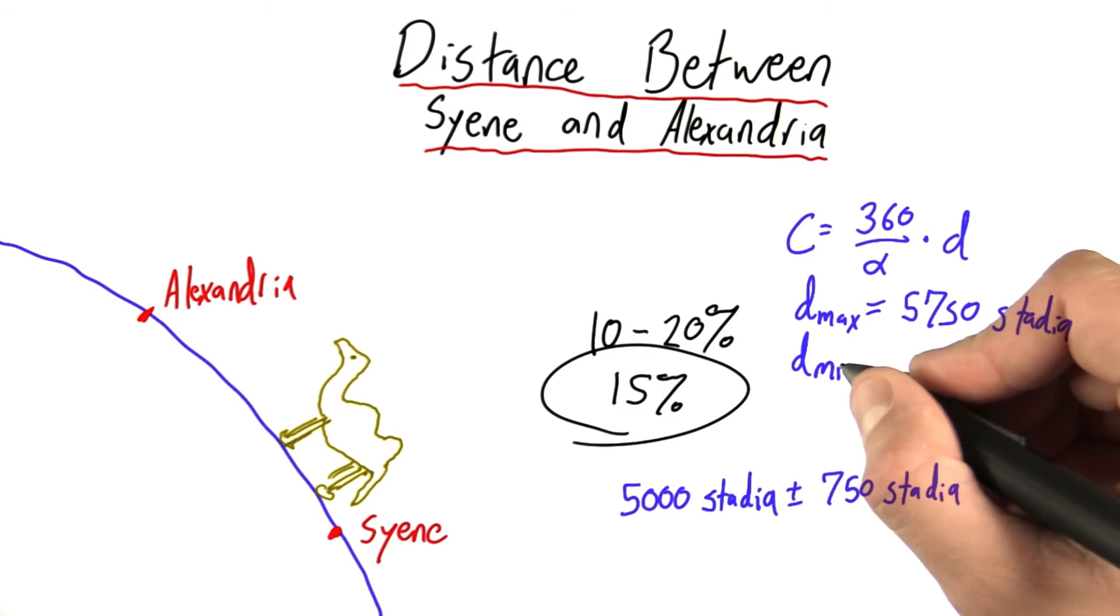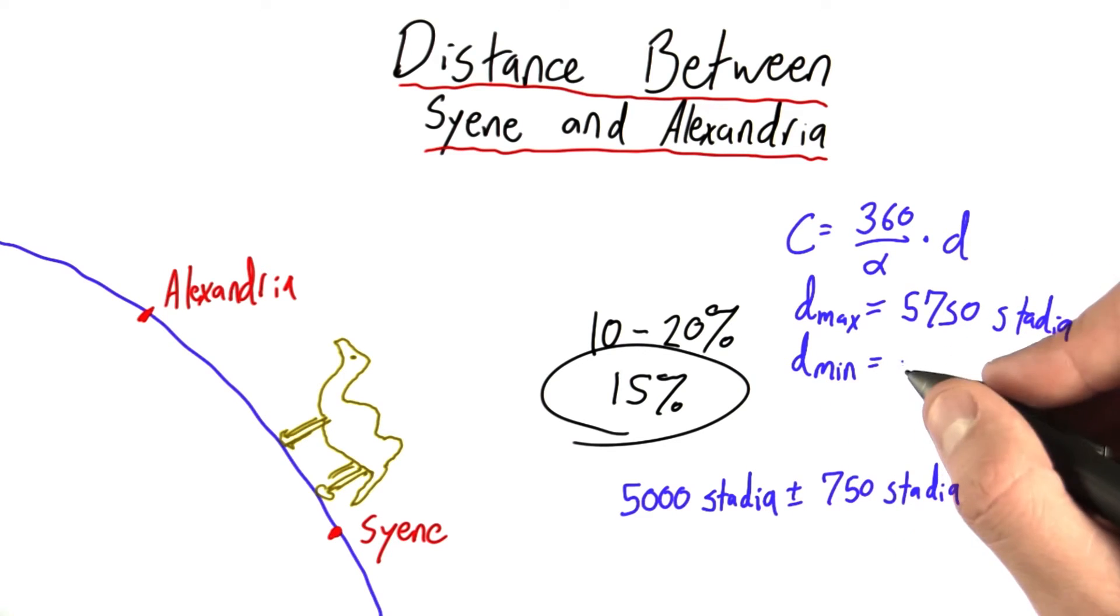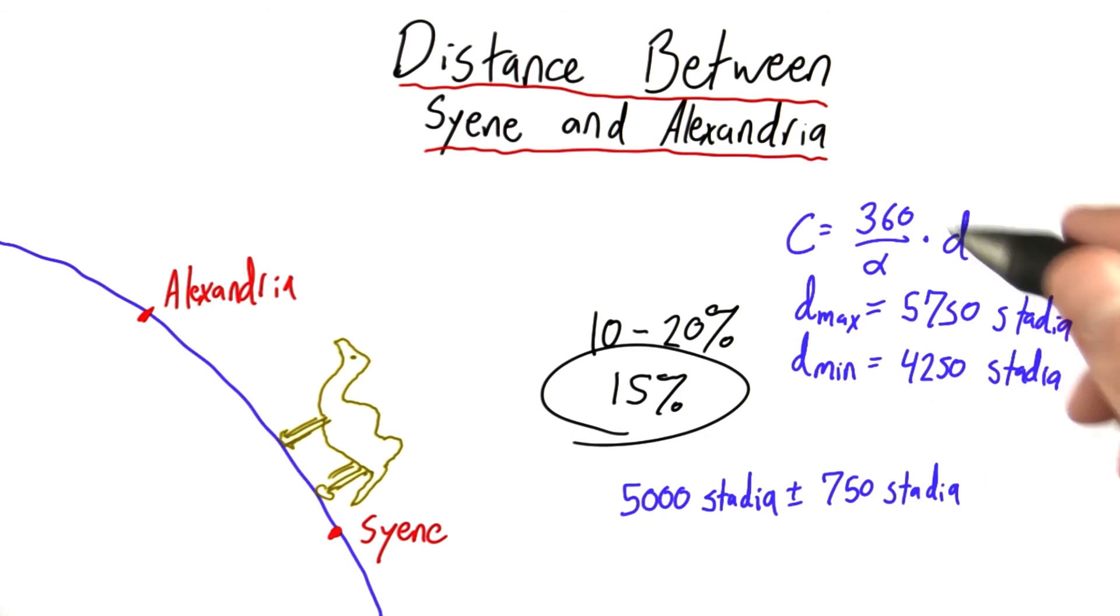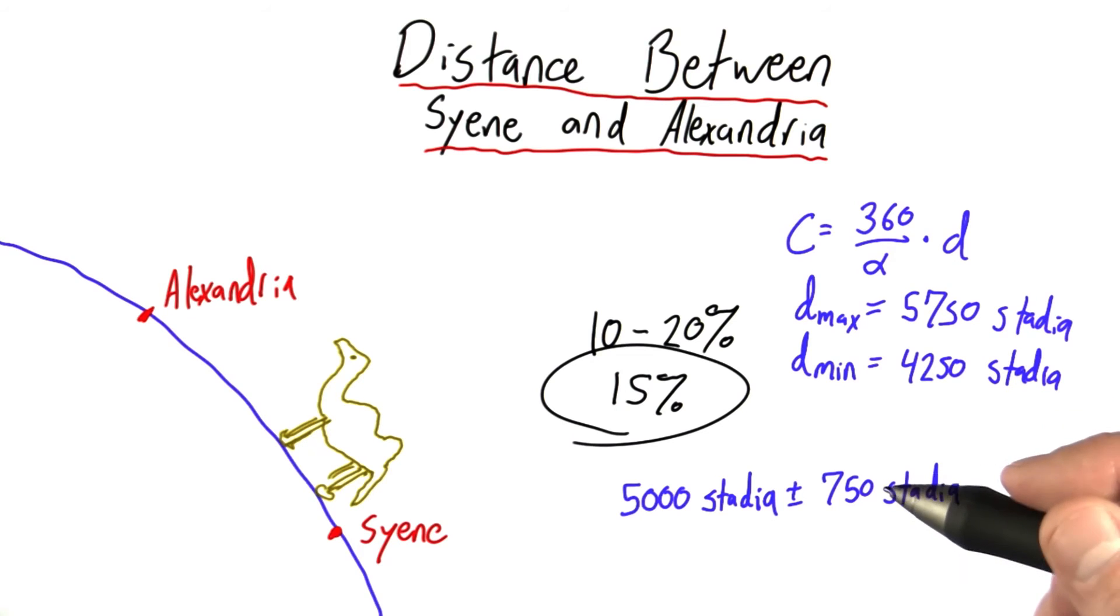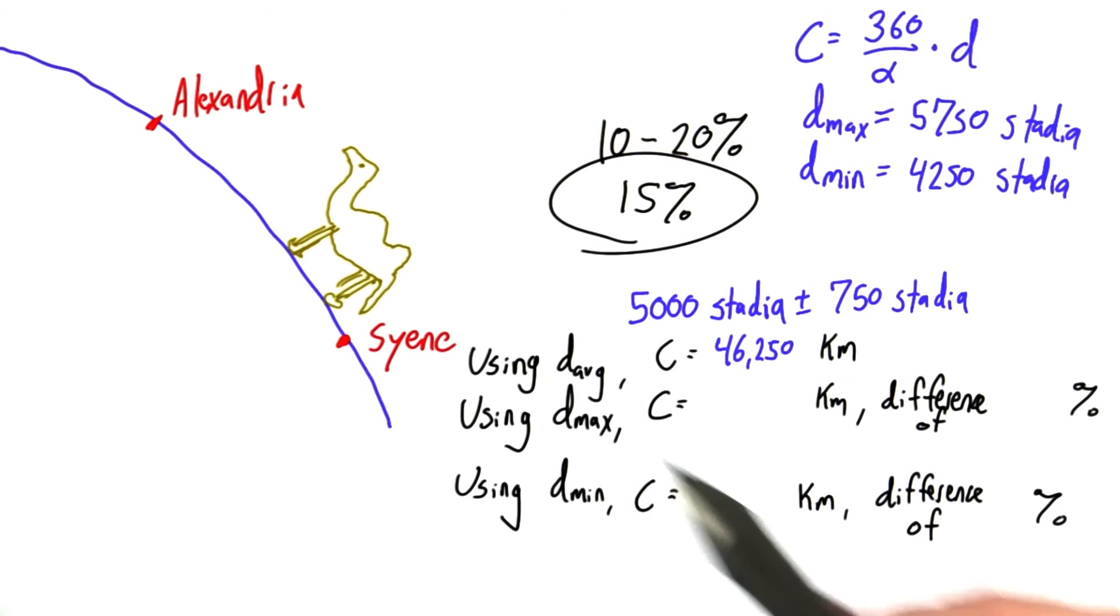D min would be 4,250 stadia. And we can calculate circumferences based on that, and then use those calculations to determine the percent error. So, we calculate the percent error.